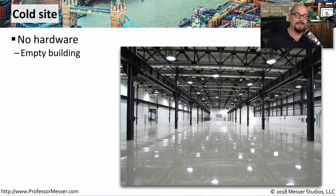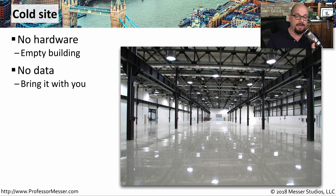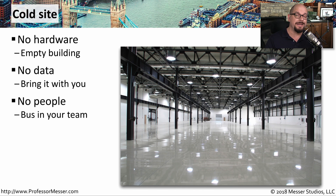One type of site is a completely cold site. This means that it is effectively an empty building that might have racks, but not much else. It's effectively waiting for you to bring the equipment, the software, and all of your data. It also doesn't have any people available to staff this building, so you'll need to bring in your own people to get everything up and running.